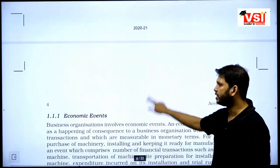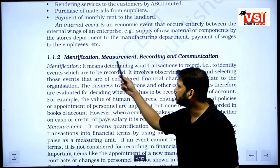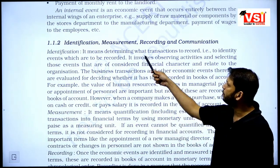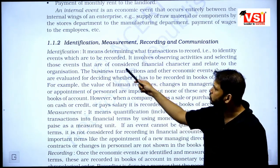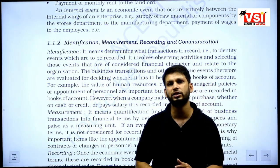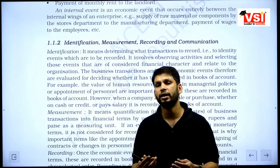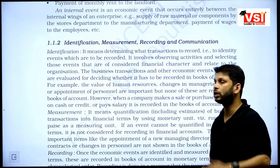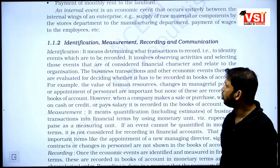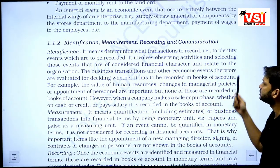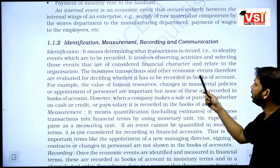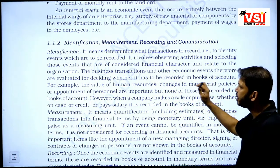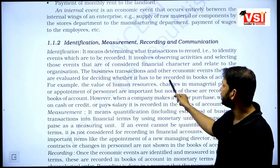The first thing in accounting is economic event. The second thing involves identification, measurement, recording, and communication. Identification means determining what transactions to record — that is, to identify events which are to be recorded. It involves observing activities and selecting those events that are of a financial character and relate to the organization. Business transactions and other economic events are evaluated for deciding whether they have to be recorded in the books of accounts.